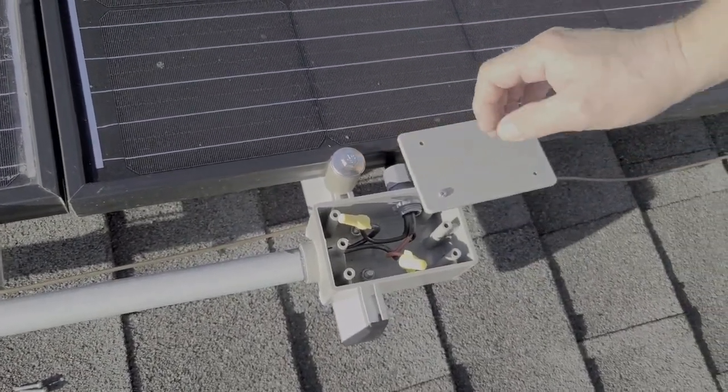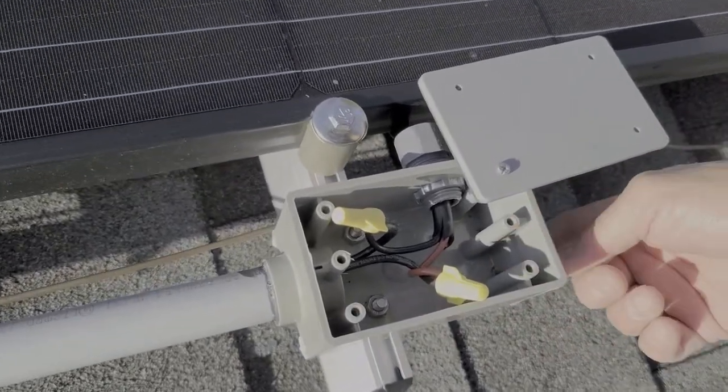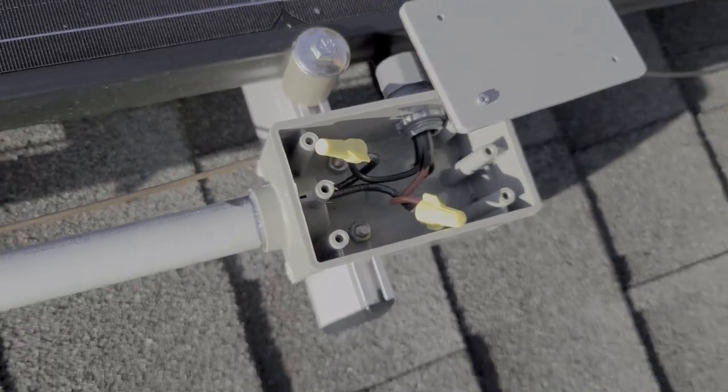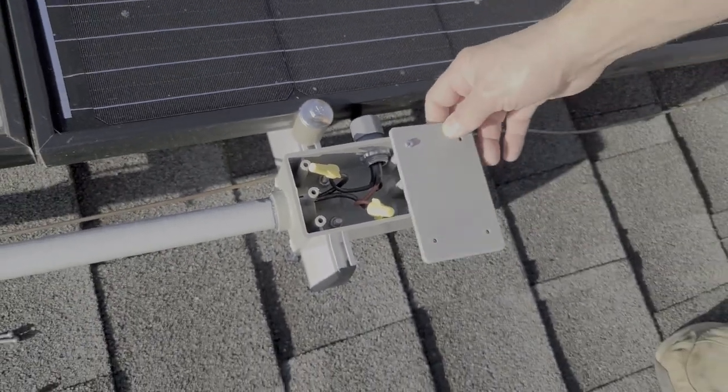Now one thing to note is that in the boxes down in the corner there I put weep holes in the downhill area just in case some water does happen to get in there. It's got somewhere to go to get out.